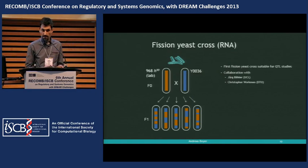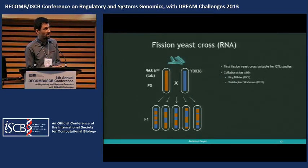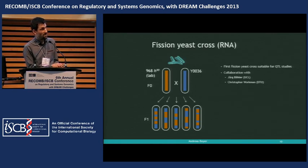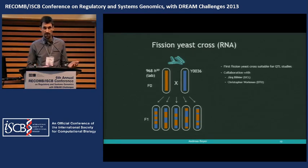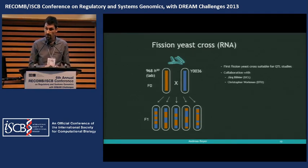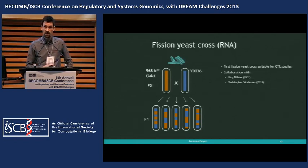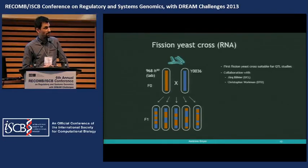The last example is related to RNA sequencing. This uses a different species — fission yeast. Fission yeast is in fact a much better model for metazoan cells for several reasons. This is the first cross in this species that is suitable for doing QTL studies, so I think this will be a very good resource for the fission yeast community.